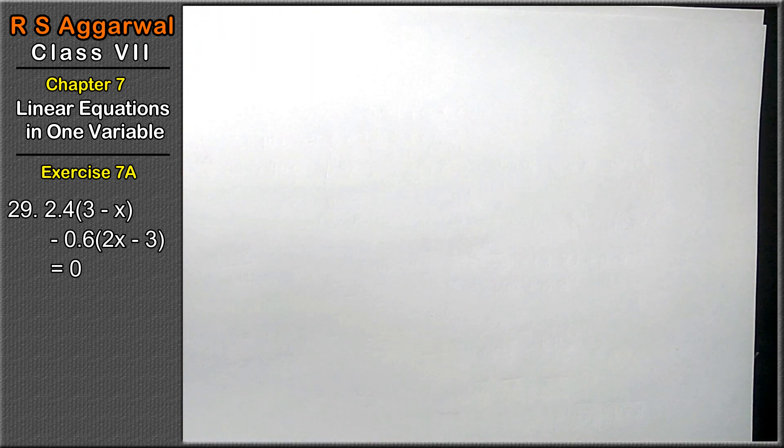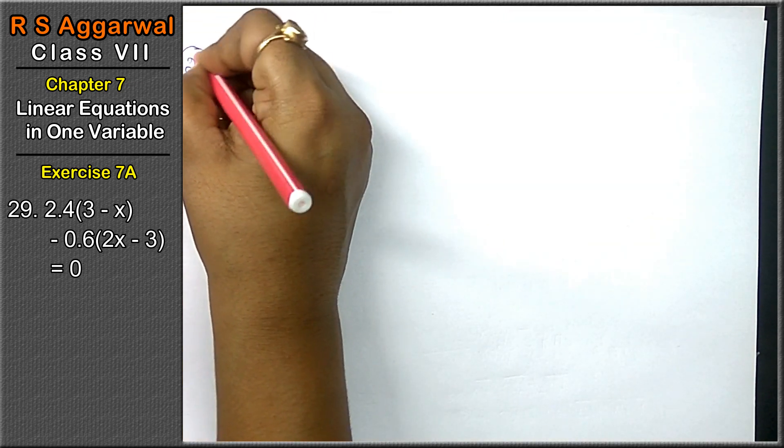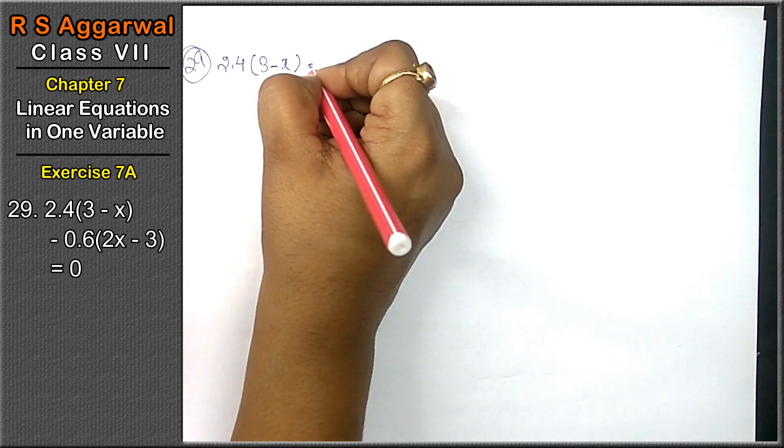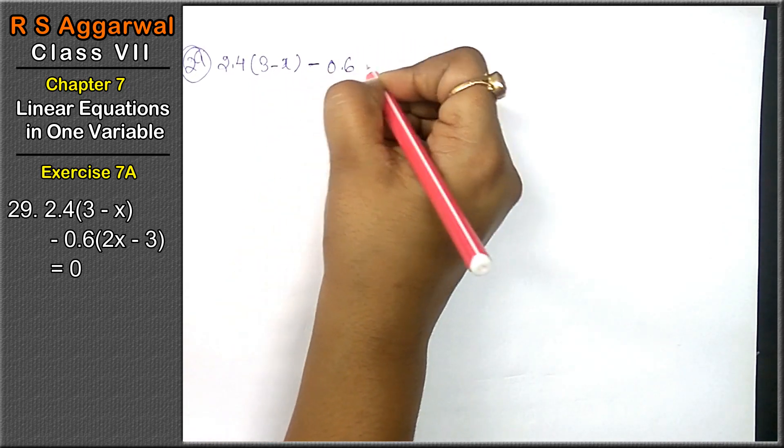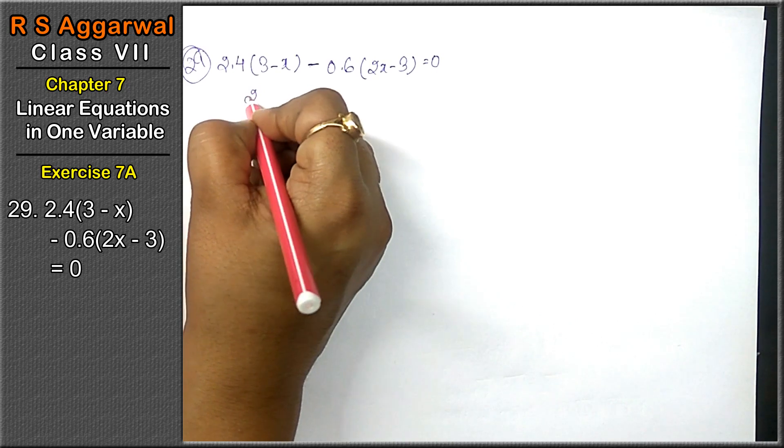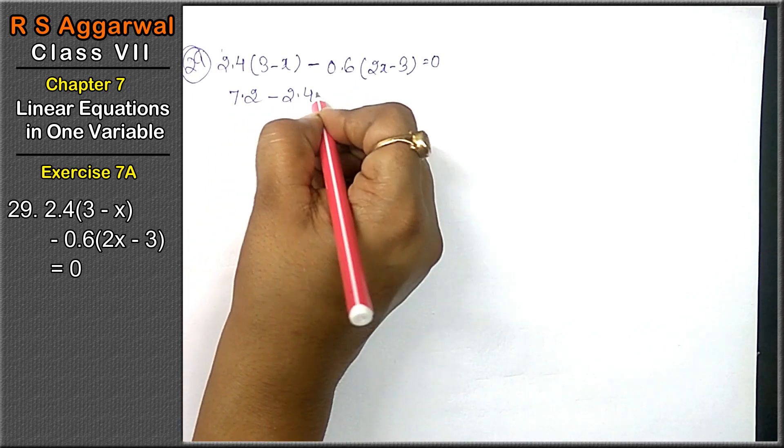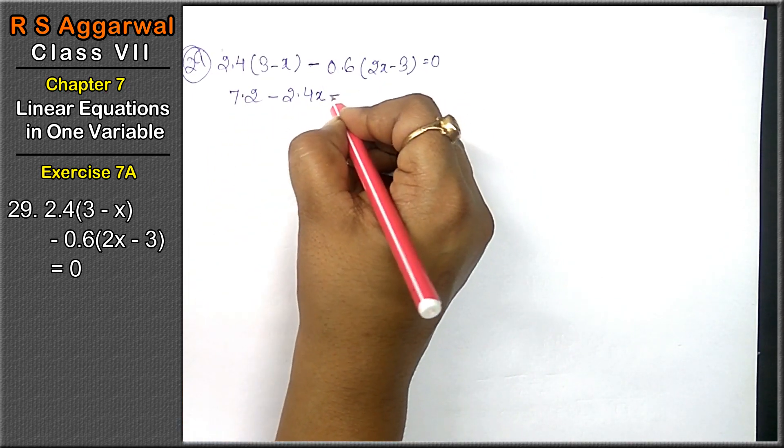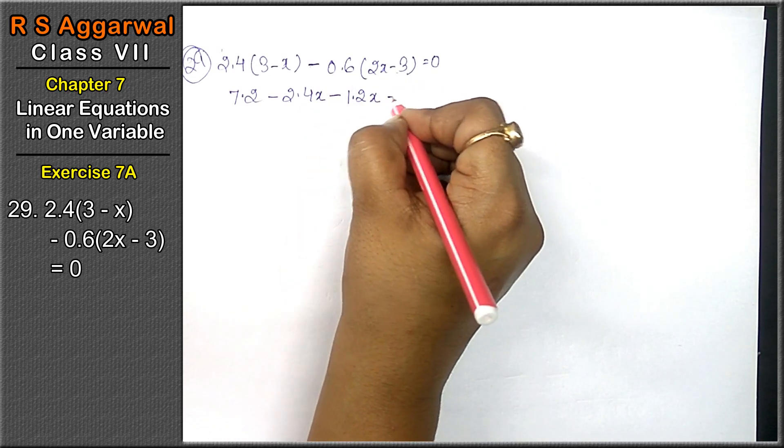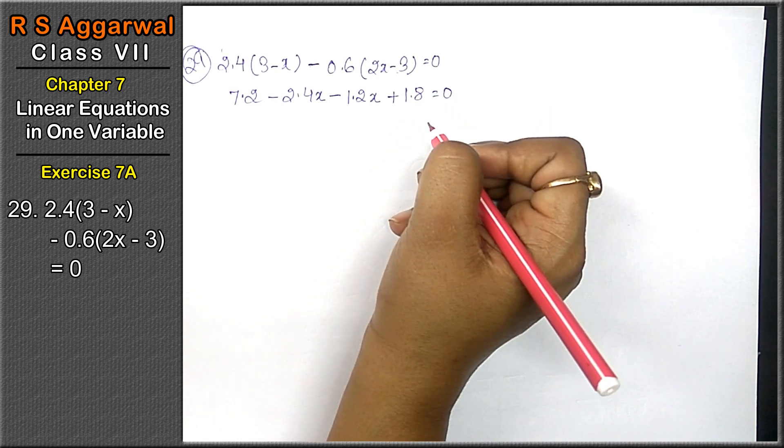Question number 29 is 2.4(3 - x) - 0.6(2x - 3) = 0. Let's open the brackets. 3 times 4 is 12, 3 times 2 is 6, and 7, point 2 here. Minus 2.4x minus, plus minus 2 times 6 is 12, point here, minus minus plus 3 times 6 is 18, 1 point, point here.